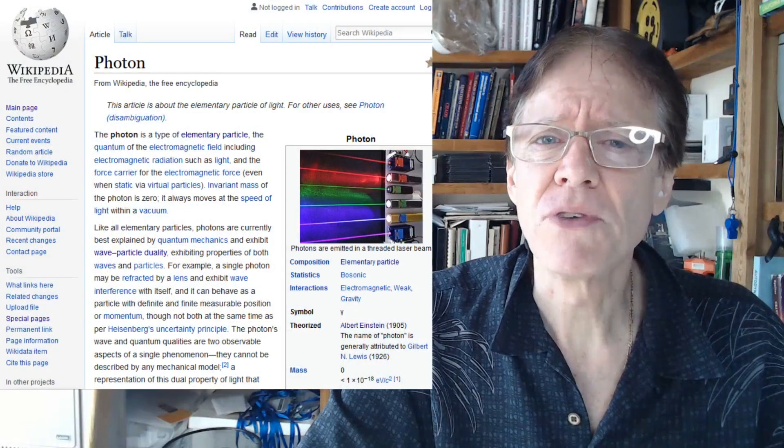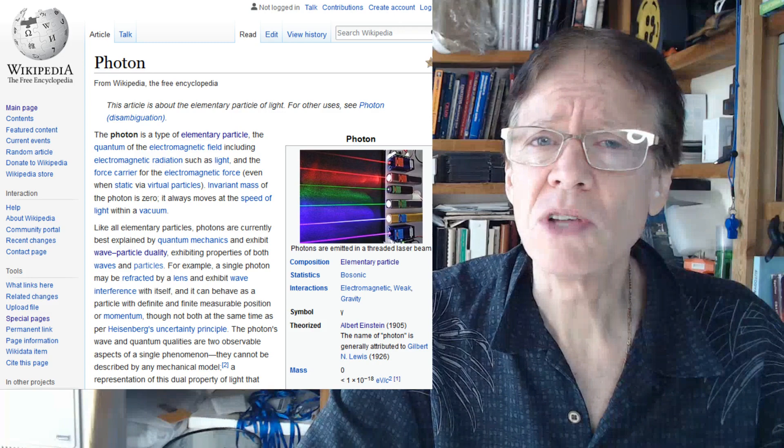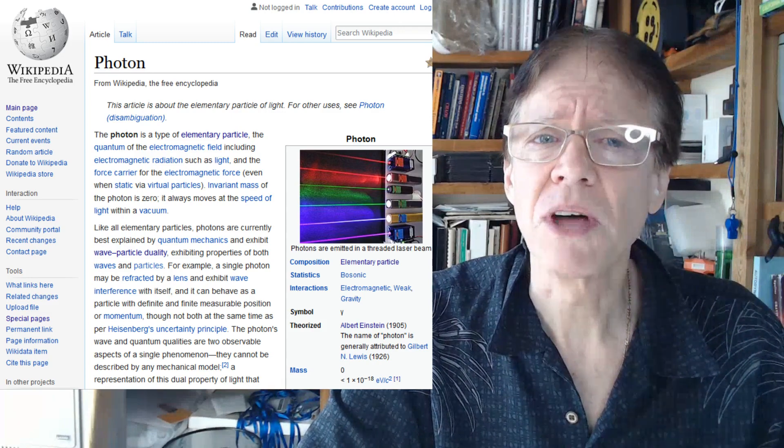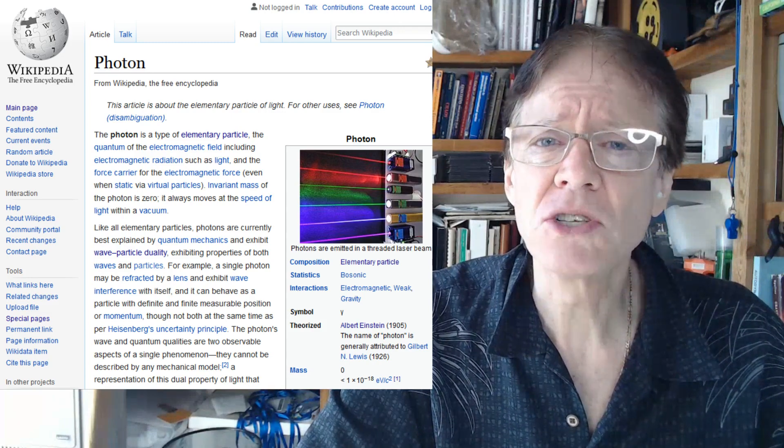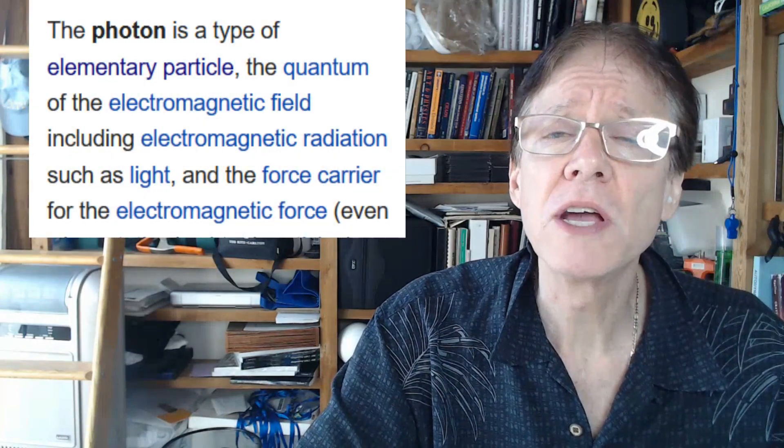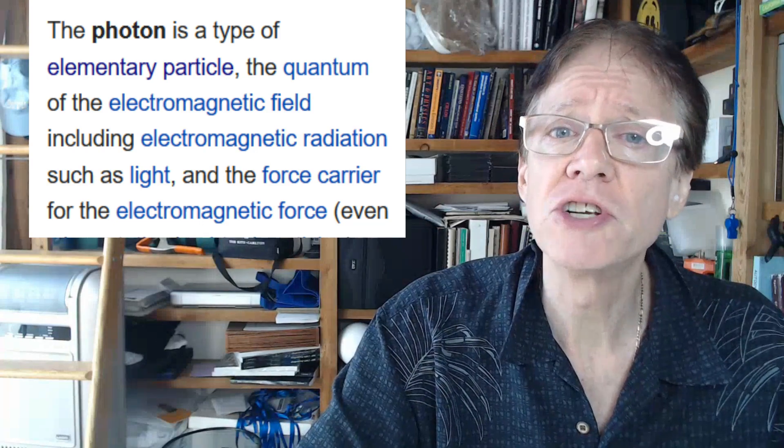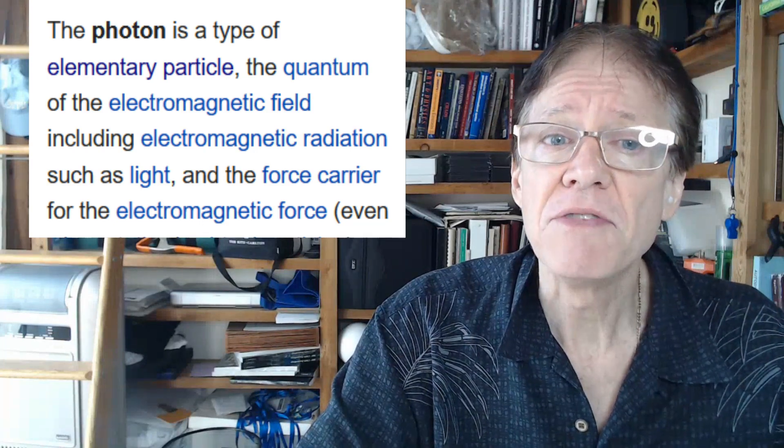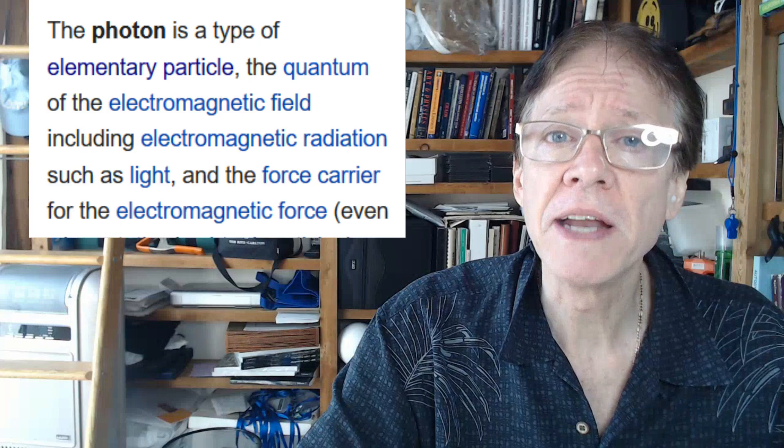The current definition of photon in Wikipedia demonstrates the schizophrenic nature of the photon. Wikipedia defines the photon as a type of elementary particle, the quantum of the electromagnetic field including electromagnetic radiation such as light, and the force carrier for the electromagnetic force.